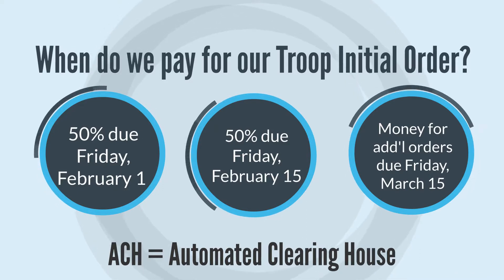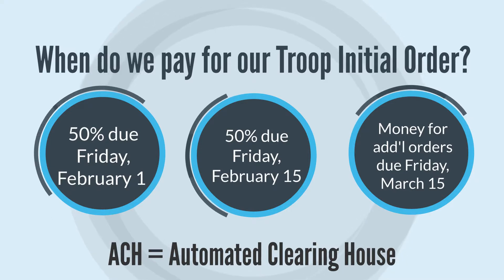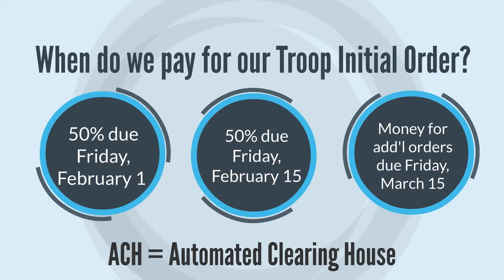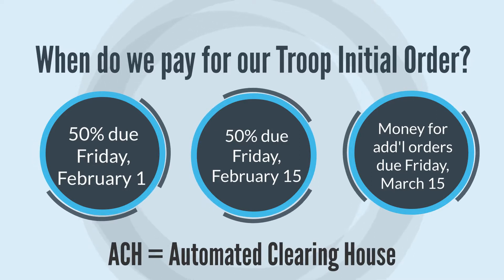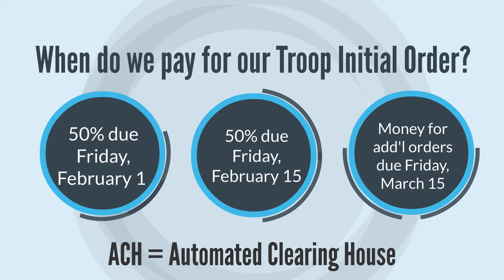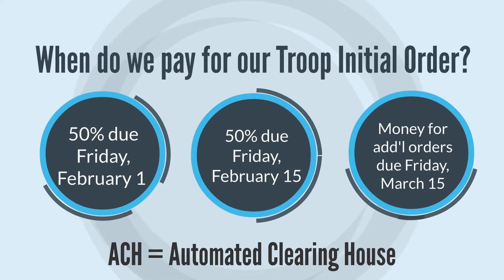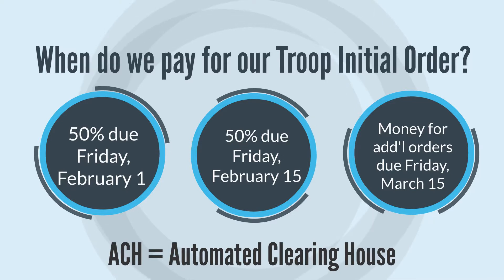The second installment is taken out of Troop Bank accounts via ACH on Friday, February 15th. The final ACH withdrawal takes place on Friday, March 15th. This ACH covers the cost of any cookies that your Troop ordered after Initial Order. You should ensure that you or another Troop volunteer deposit all cookie money into your bank accounts by the Wednesday before ACH withdrawal so that your ACH is not declined.